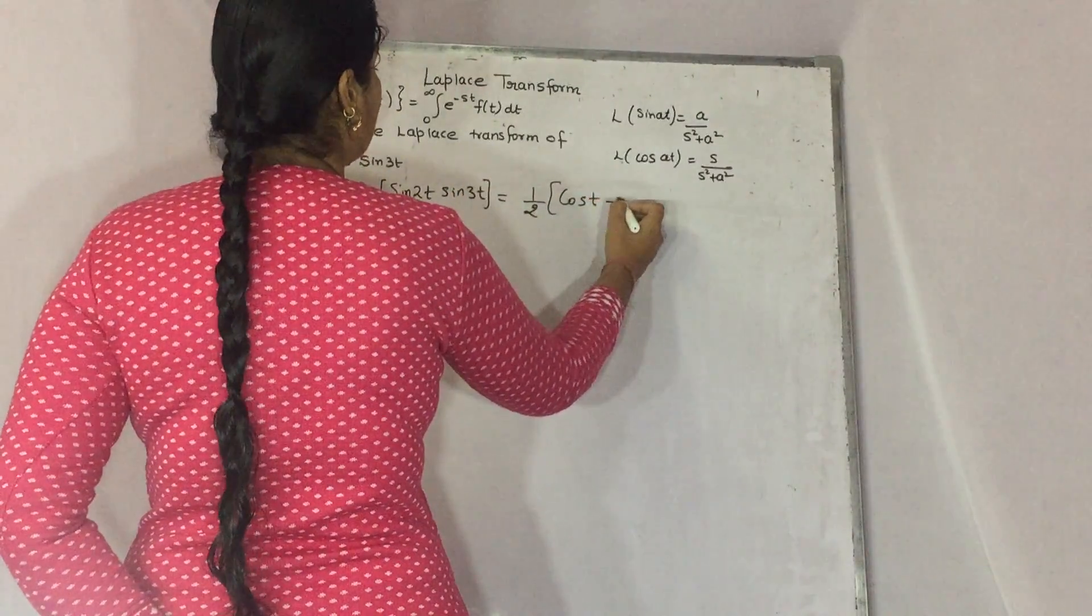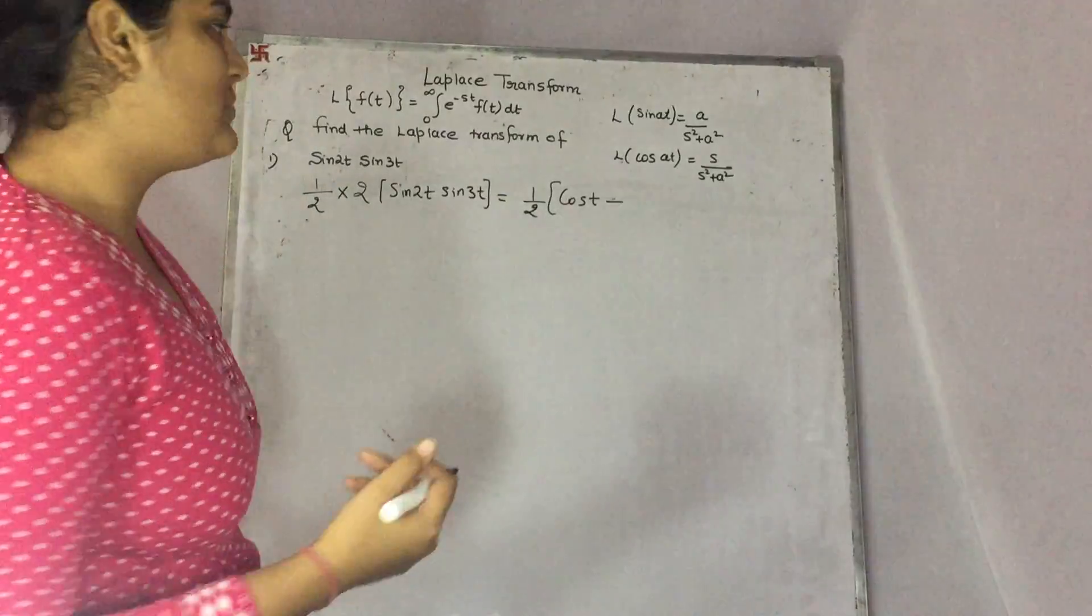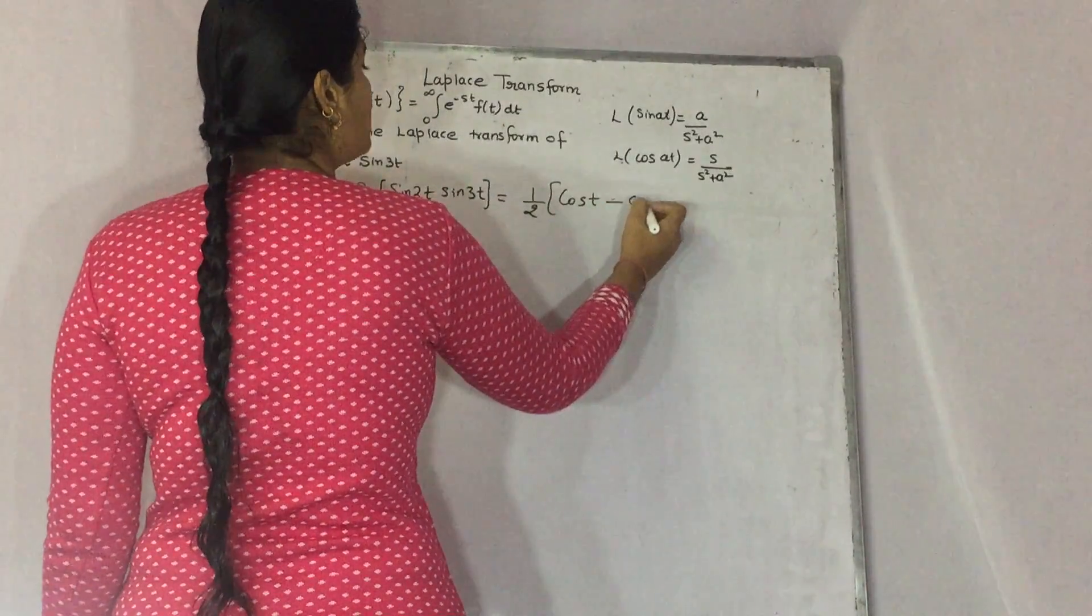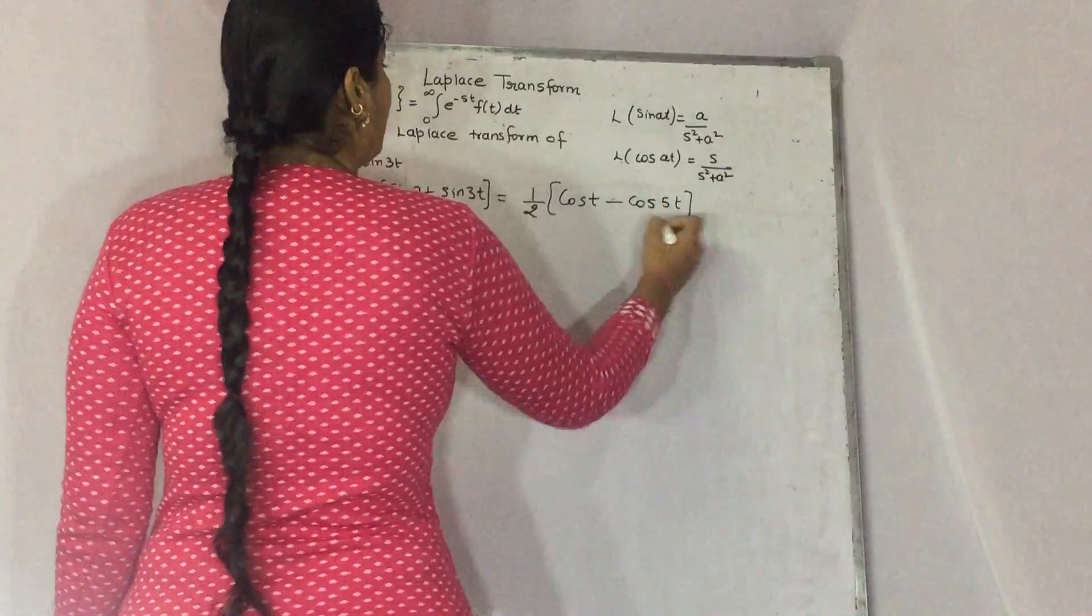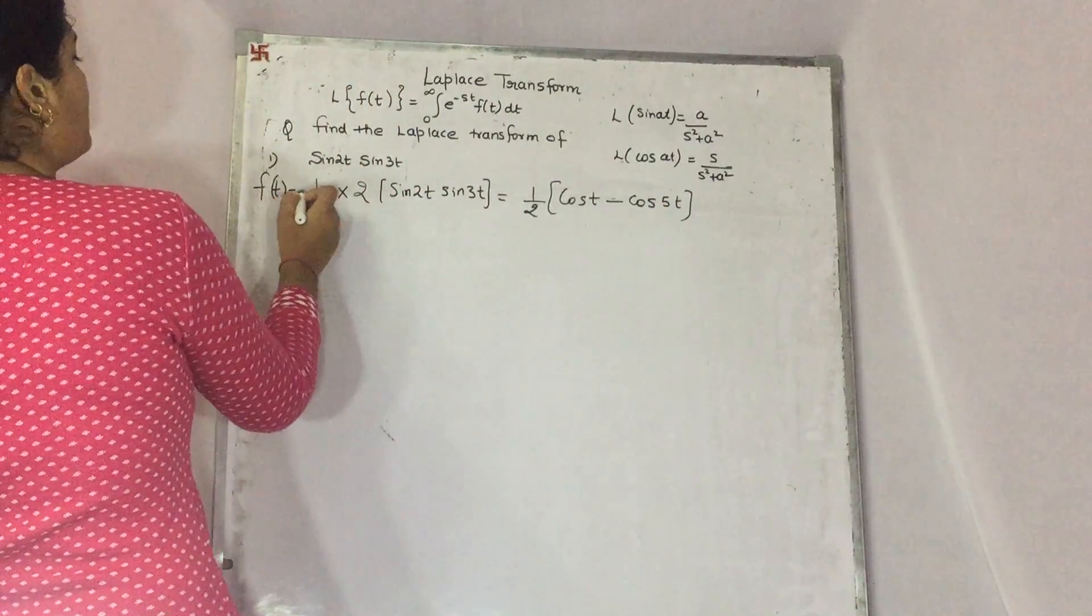Minus is in the formula, and cos a plus b. So cos a plus b becomes cos 5t. Now if you take this as your function f in terms of t, if you take the Laplace transform...